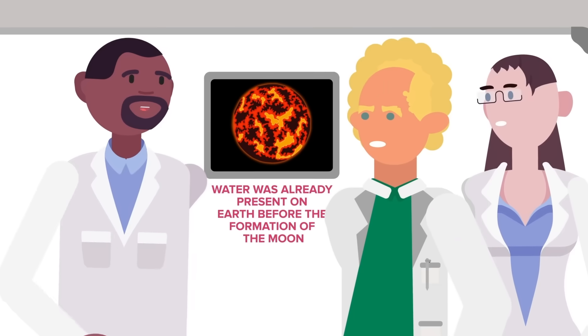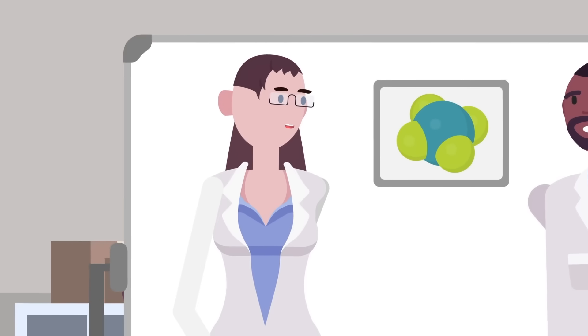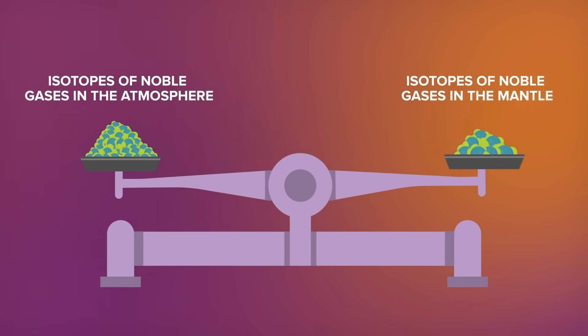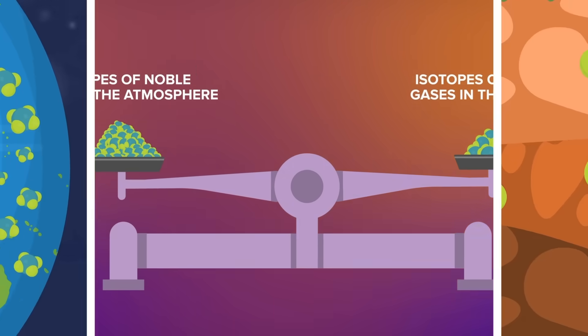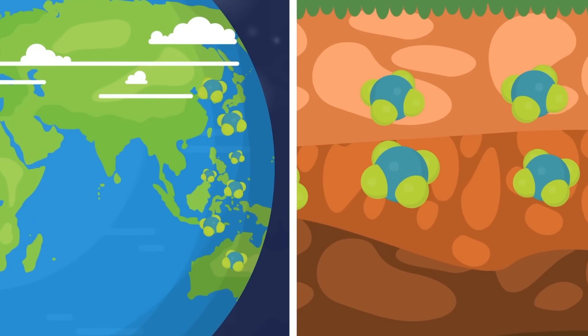But this theory doesn't have unanimous support by any stretch. Scientists who are skeptical of the early water theory point to the noble gas isotope ratios of Earth's atmosphere, which differ dramatically from the ratio in the mantle. This would indicate that they were likely formed from different sources and at different times.